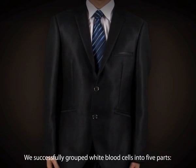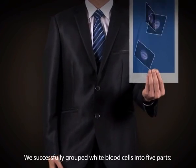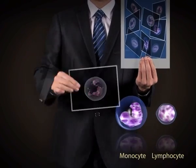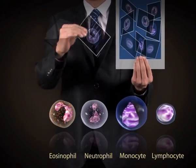We successfully grouped white blood cells into five parts: the lymphocyte, monocyte, neutrophil, eosinophil, and basophil.